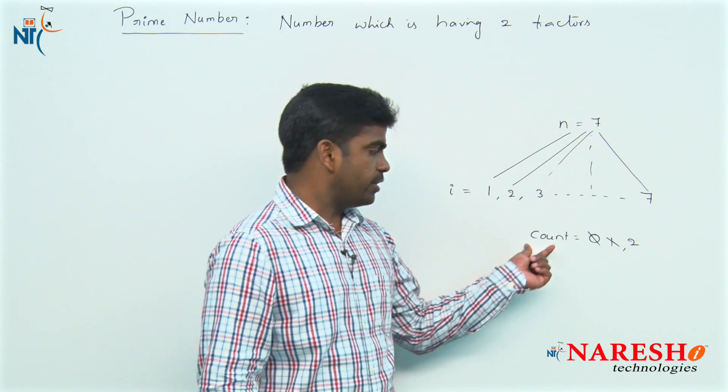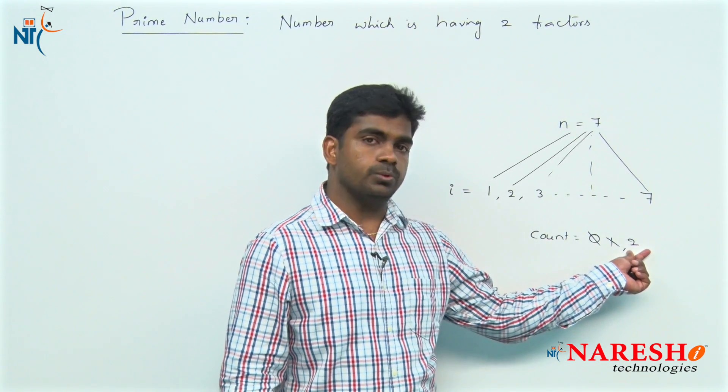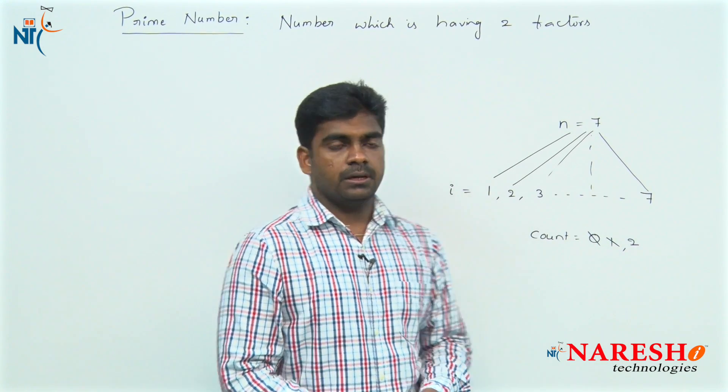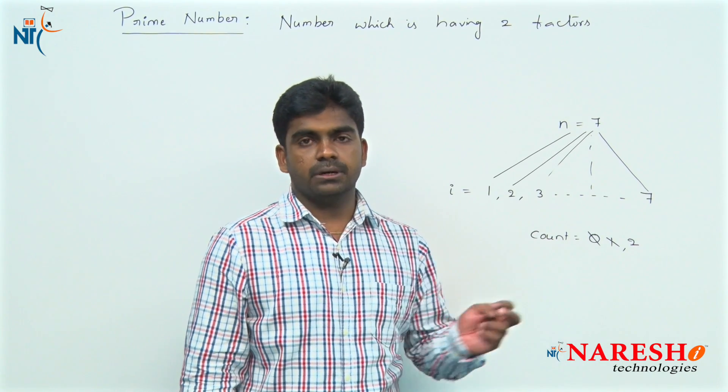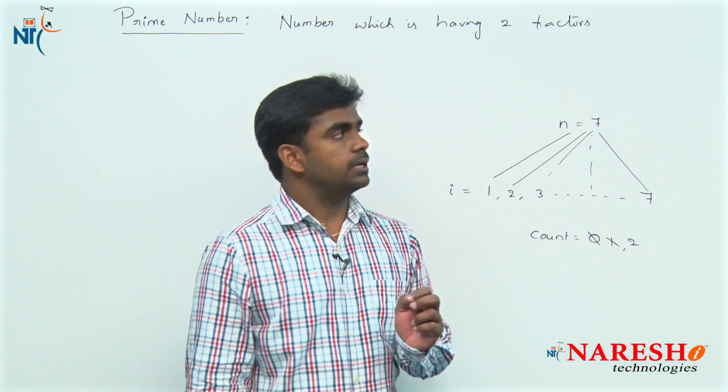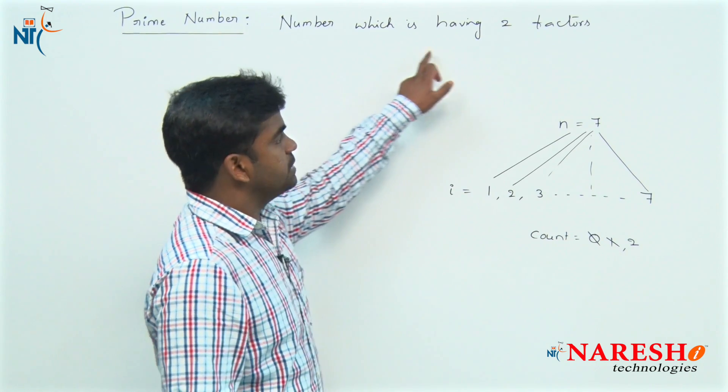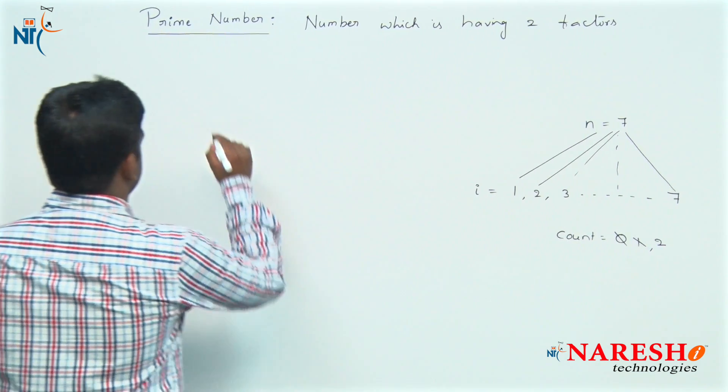Finally, check if count value is equals to 2, it is a prime number. If it is less than 2 or greater than 2, it is not a prime number. The number which is having two factors. How to write the program in C?